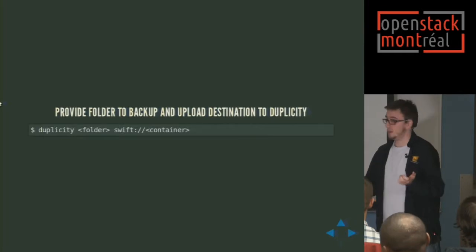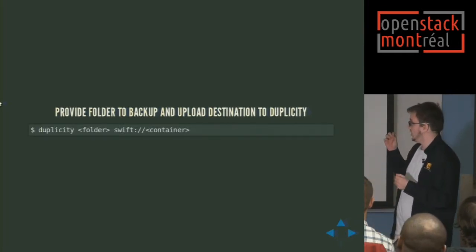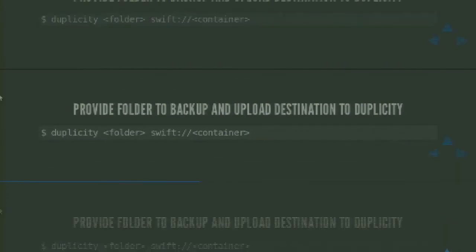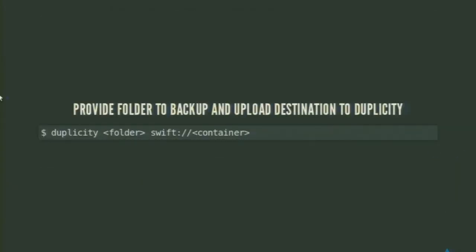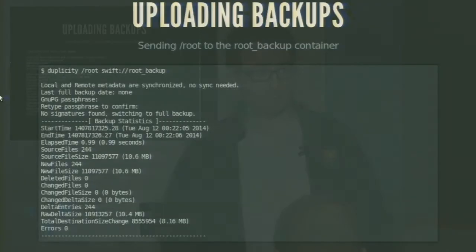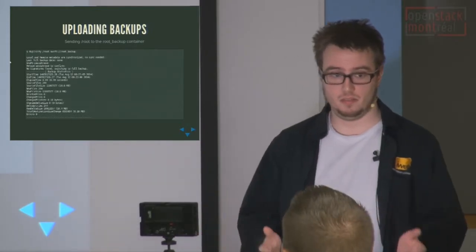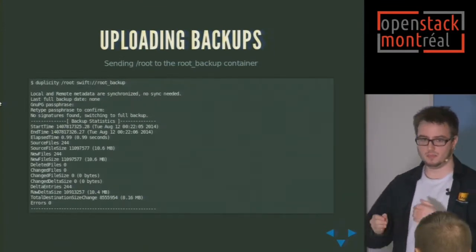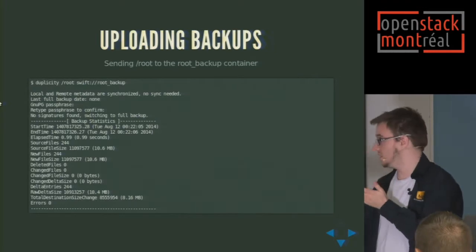How do you do backups with Duplicity? It's really, really simple. You provide the folder you want to backup and the destination of your backups — it's a bit like R-sync. You have what you want to copy and where you want to copy it. In this case it's a URL format: Swift, and then the container you want to send your backups to. Uploading backups sends the entirety of the /root folder to the Swift container because it's the first time I'm uploading it — it compresses the data, encrypts it, and sends the entirety of it to Swift.